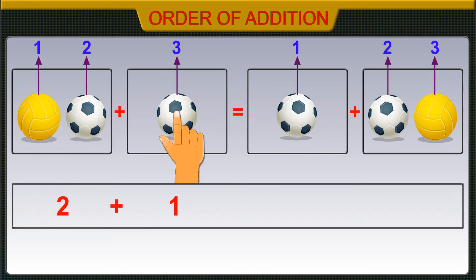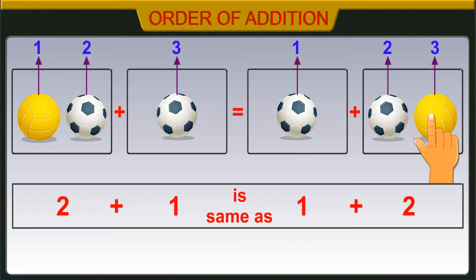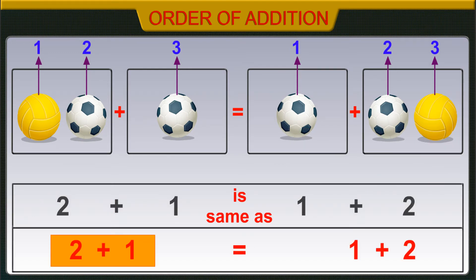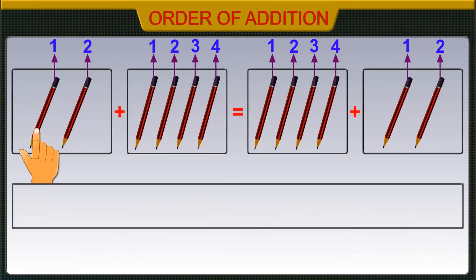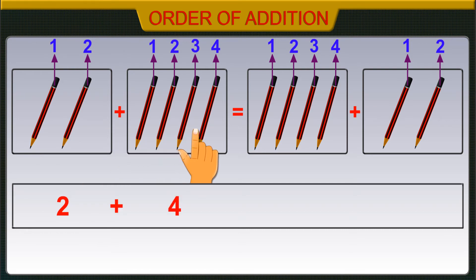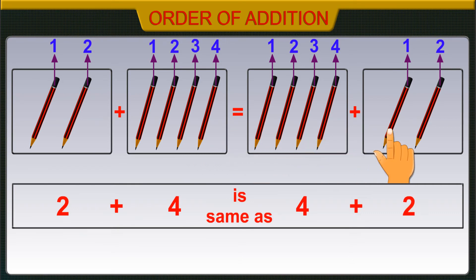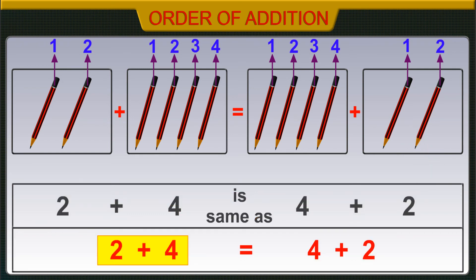2 plus 1 is the same as 1 plus 2. 2 plus 1 is equal to 1 plus 2. 2 plus 4 is the same as 4 plus 2. 2 plus 4 is equal to 4 plus 2.